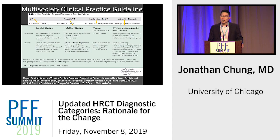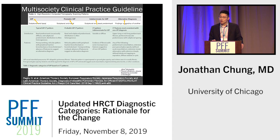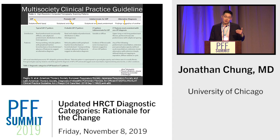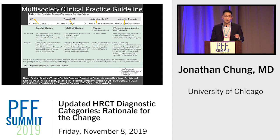Then in 2018 we went to a four-tier system. These are the multi-society guidelines: UIP, probable UIP, indeterminate for UIP, and alternative diagnosis. As most of you probably know, there are also Fleischner Society white paper guidelines, which describe an essentially very similar classification system — for all intents and purposes, nearly exactly the same.